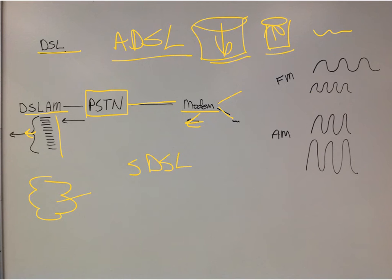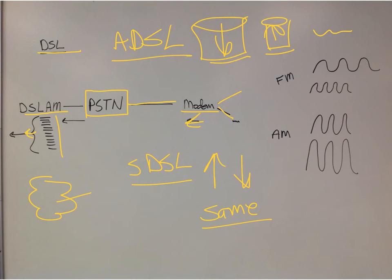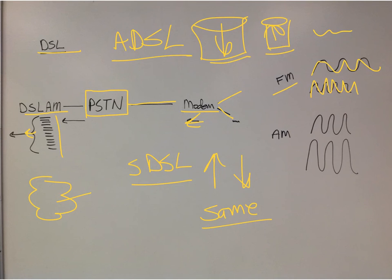Symmetric DSL typically has the same upload and download speed. If you're running symmetric DSL, you may need a separate phone line if you still want a landline. We talked about modulating and demodulating, and changing frequencies to enable broadband. FM changes frequencies — you increase the frequency. AM keeps the same frequency but increases the amplitude. These are ways of managing signals, and you can distinguish radio stations using these methods.